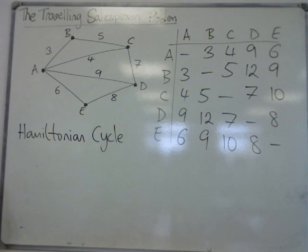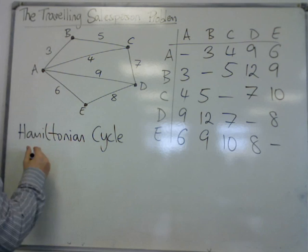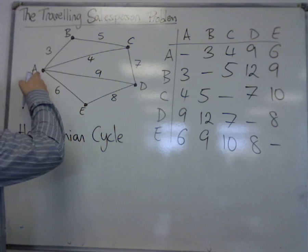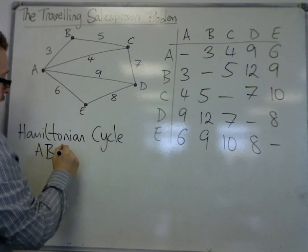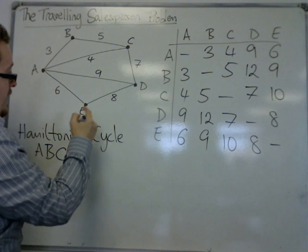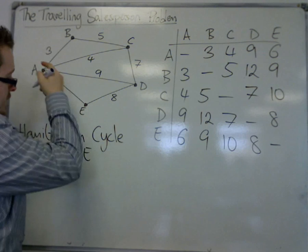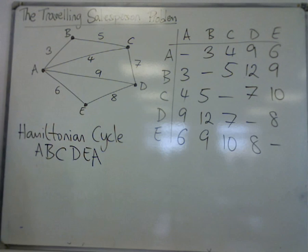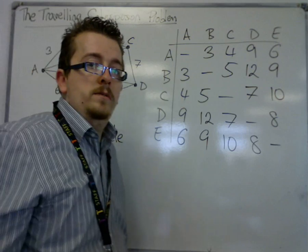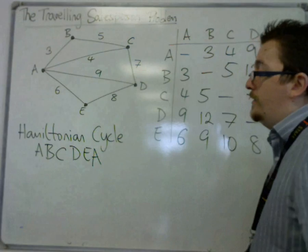So one possible route is A, B, C, D, E, and back to A. And that's a perfectly valid route, that is a tour, it does exactly what we wanted it to do.